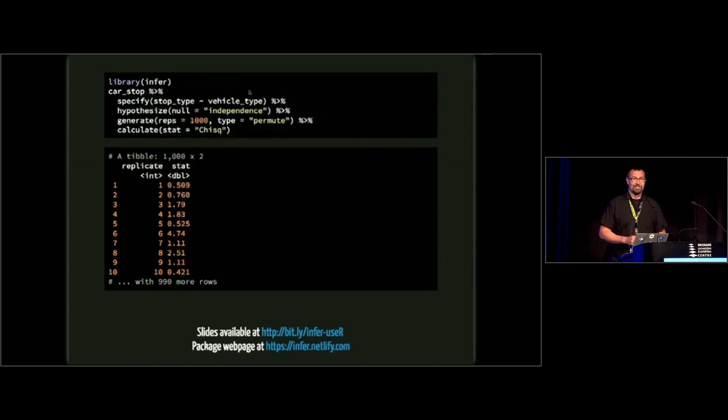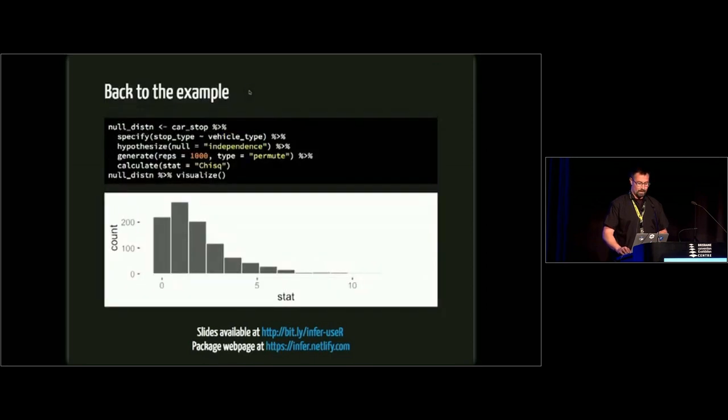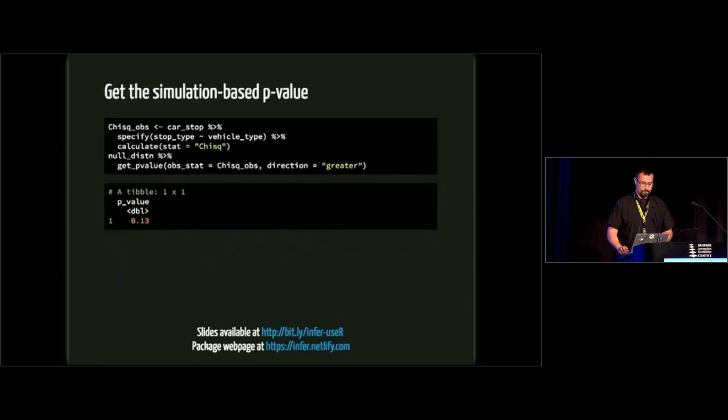This is what the pipeline actually looks like. Car stop, then we specify that we have stop type versus vehicle type. We hypothesize that the variables are independent. We generate a thousand of them using permutation as our type, and then we calculate the chi-square test statistic. We get something that looks like this. Back to our original example, we can then pipe that into visualize, and we get a histogram that looks like this. Then we can use, this is a brand new function in the package, get_p_value. You specify what the observed statistic is. If you want to calculate an observed statistic, that's really just skipping that generate and hypothesize step. You just go directly from specify to calculate, and you get from your original data what the observed statistic is. Here we want to do a chi-square test, so we're going to go direction greater, everything to the right of that, and we get about the same value here, 0.13. If you want to further visualize this, in the visualize function you can pass in those exact same arguments, and it shades things nicely. So here it's everything greater with a dark red line at the observed test statistic.